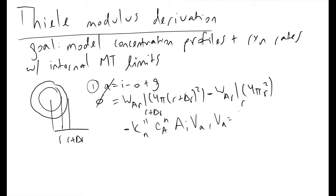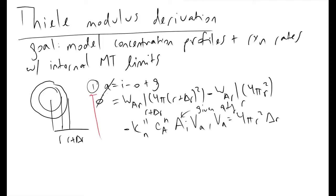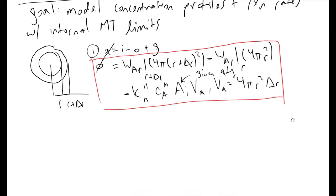V_A, the volume of the annular region, is approximated by assuming delta R is small enough that we can neglect curvature between the two shells. We treat it essentially as a shoebox: the base area is 4πR² and the height is delta R. A_i is a given quantity provided by the manufacturer. This mole balance is where we begin our Thiele modulus derivation — I'll call this equation 1.